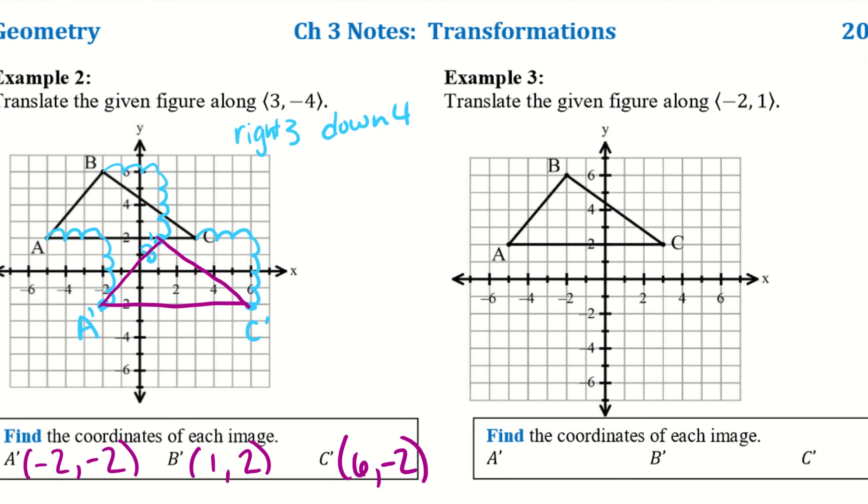Alright, let's go ahead and try this with example 3. So translate the given figure along negative 2, 1. So that means left 2 and up 1. Alright, so we'll start with A. Left 2, up 1. So A prime. B, left 2, up 1.